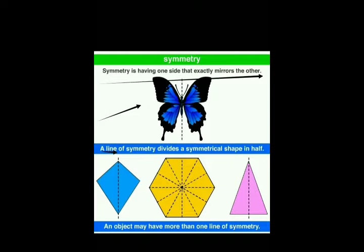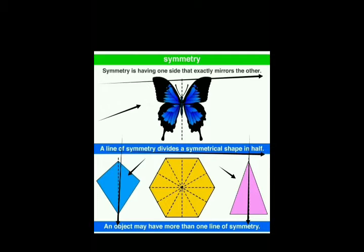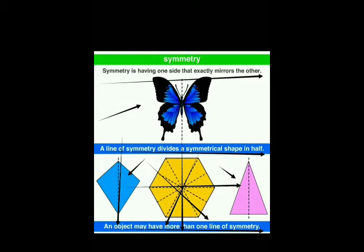Next is the line of symmetry, which divides a symmetrical shape into half. A vertical line divides this figure into half, and in this triangle shape a vertical line also divides the triangle into half. An object may have more than one line of symmetry — in this figure we have a vertical line, horizontal line, and many other diagonals.